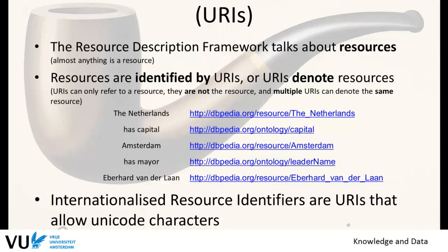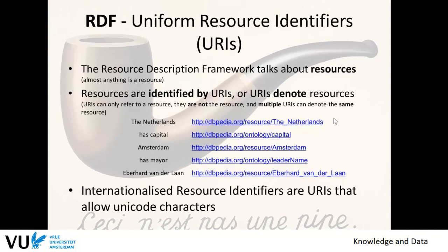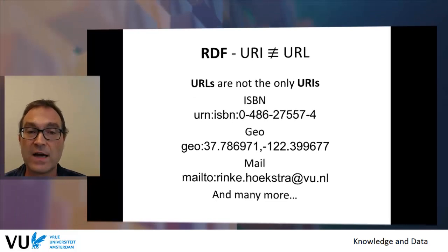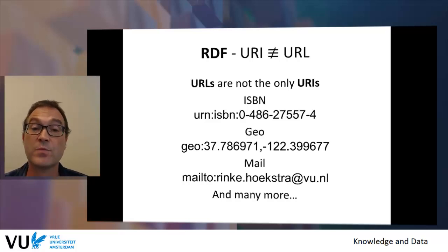There is a newer term, IRI, now used in the specification, which is in principle the same as a URI but allows for Unicode characters. The main point is that URIs are not the objects themselves but identifiers for objects — we don't deal with objects directly, only with identifiers for them. URIs do not need to be URLs; there are other ways of uniquely identifying a resource, such as ISBNs for books, geolocations for specific places, or email addresses like 'mailto:Rienke.Hoogstra'.